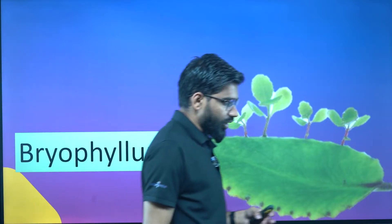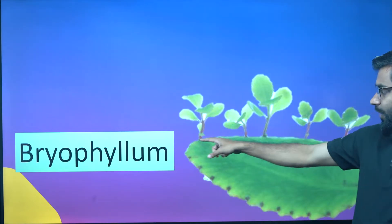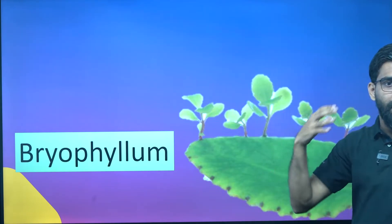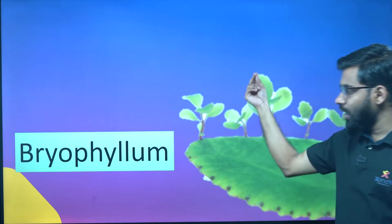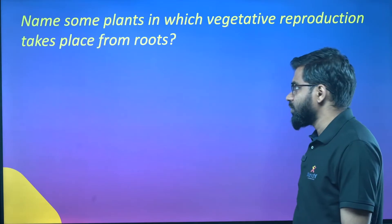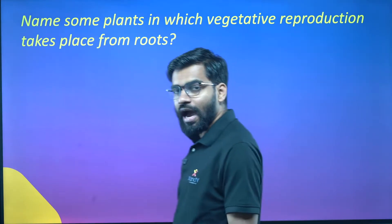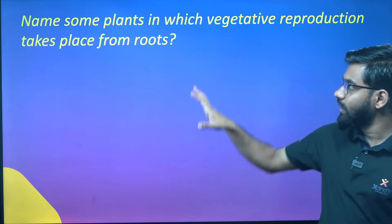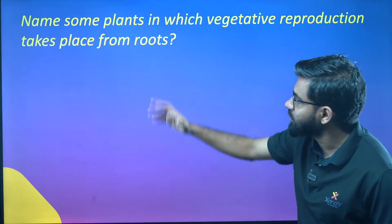That is a bryophyllum. What is this plant? This is a leaf plant — it grows from a leaf. Now there is a question: Name some plants in which vegetative reproduction takes place.